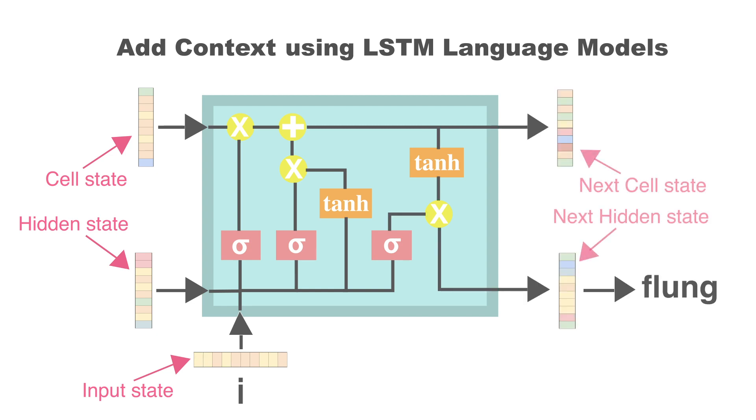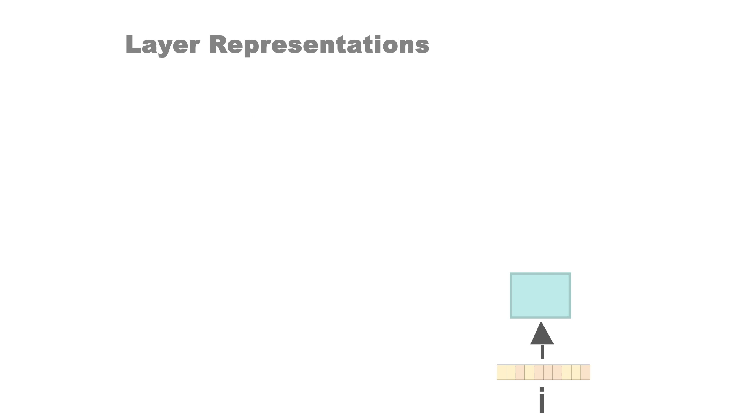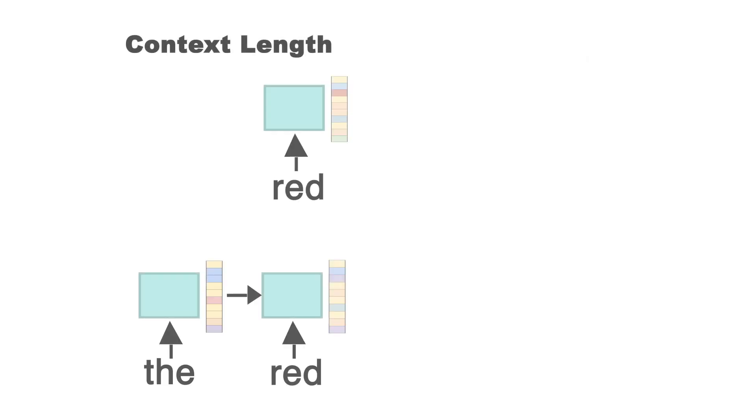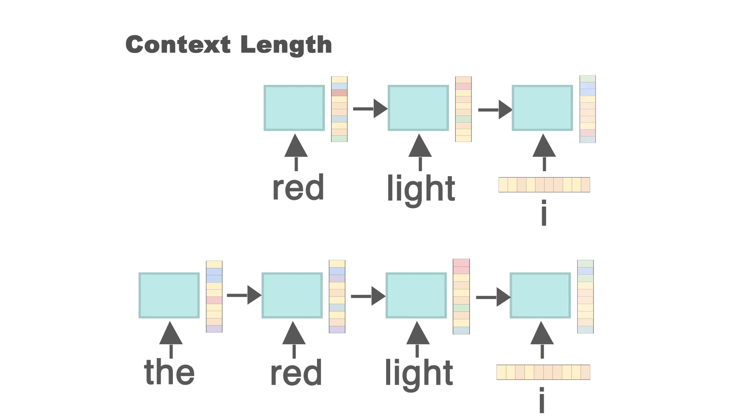We hypothesize that this representation effectively incorporates context and can be useful to predict brain responses. Our LSTM language model has three layers. And we can extract different context vectors for a word from each layer. By varying the number of words the LSTM uses to build a memory state, we can also alter the length of the context.